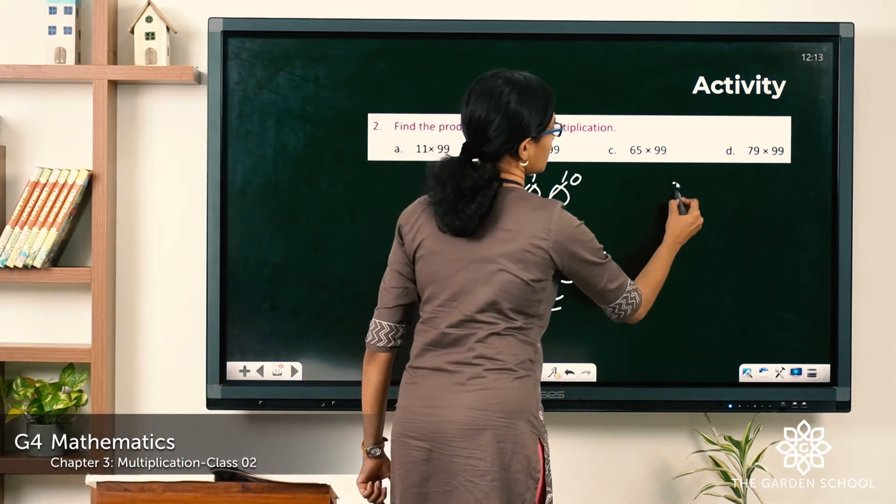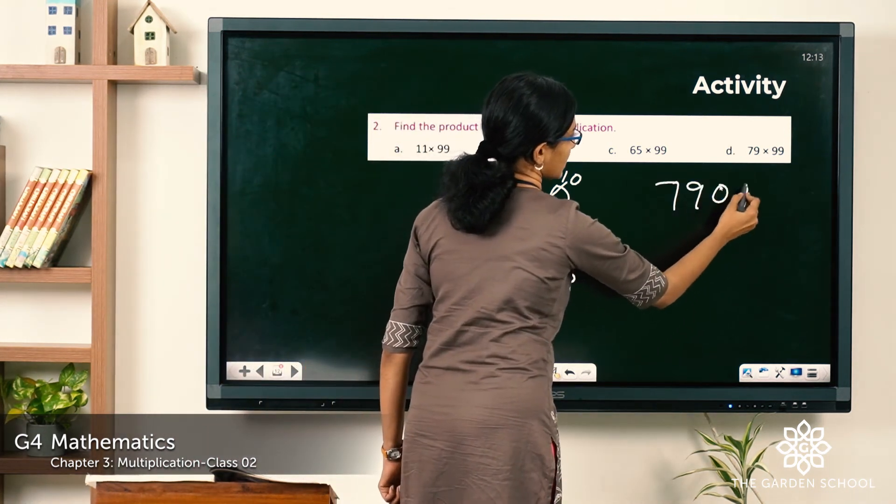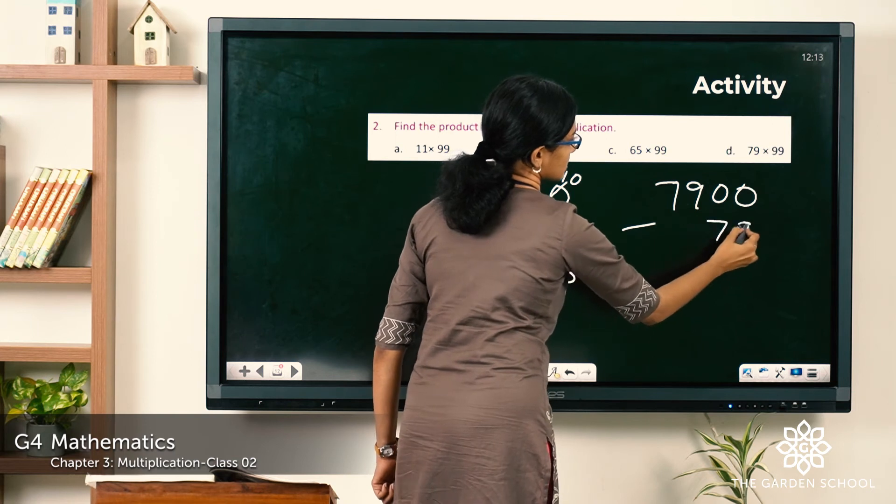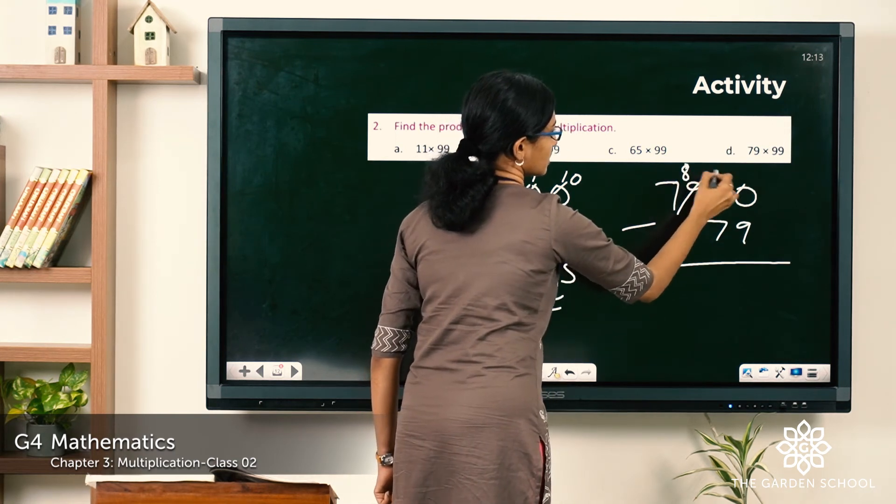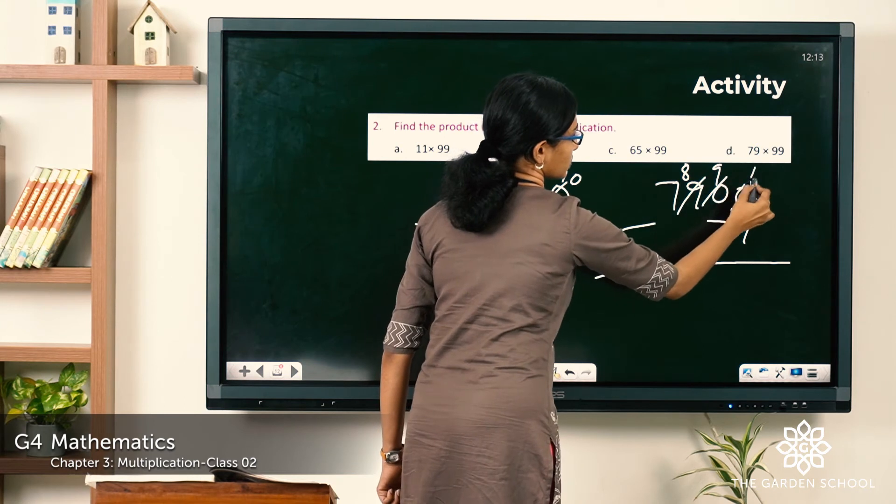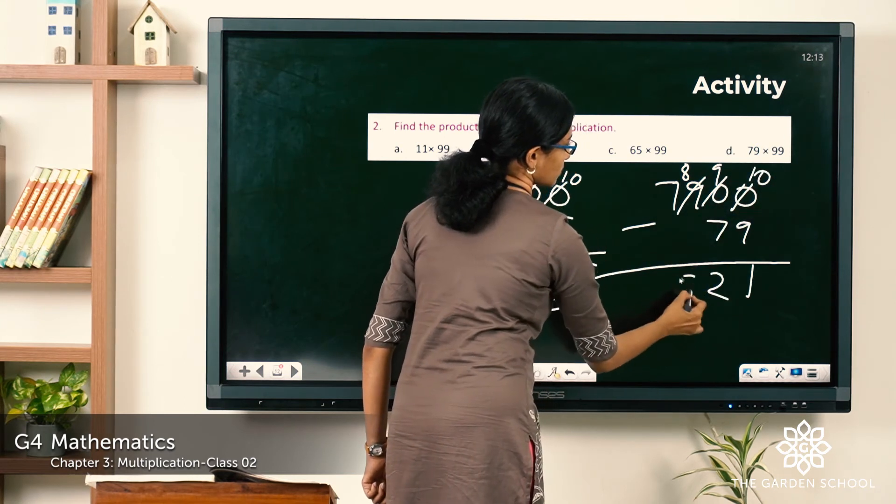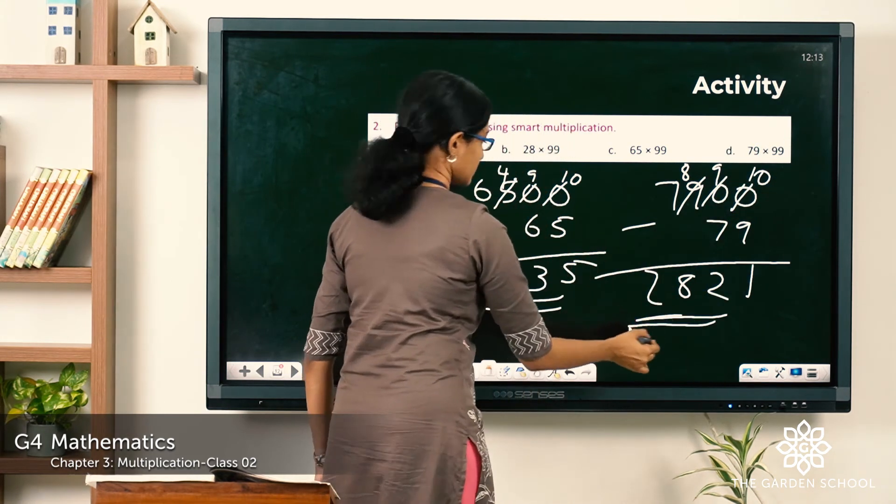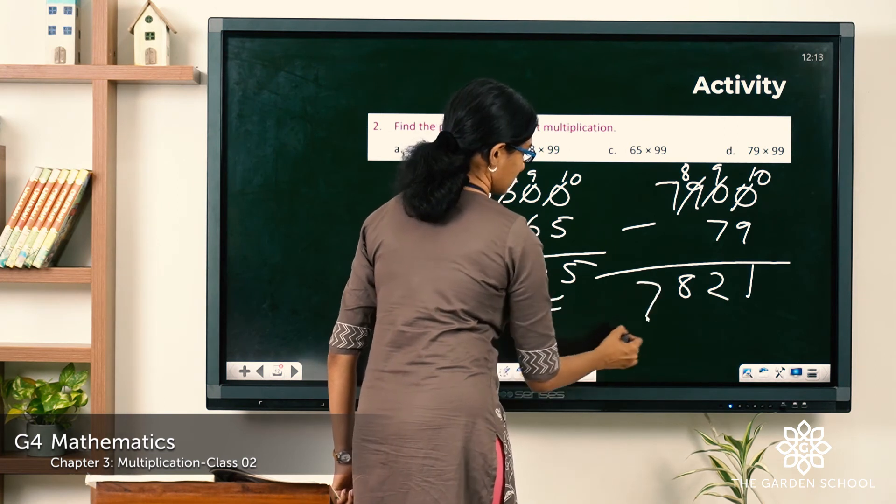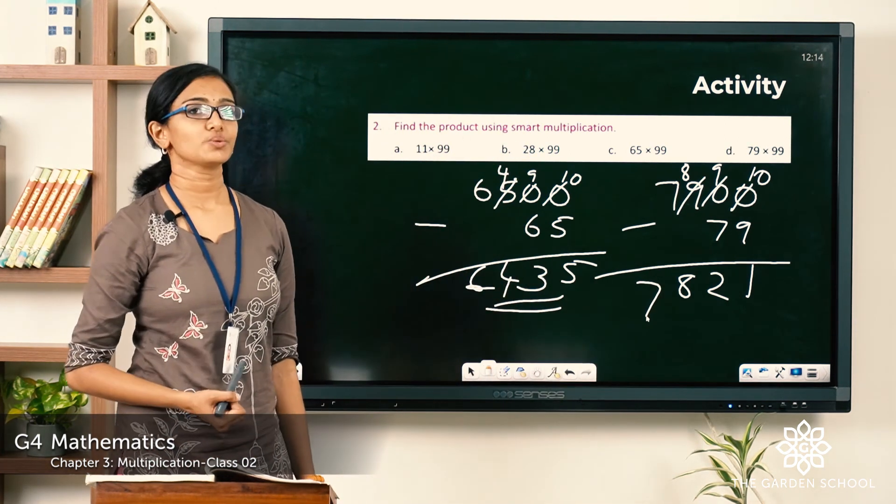Now question D would be equal to 7900 minus 79. So regrouping gives you 1, 2, 3. What is the answer? 7821.